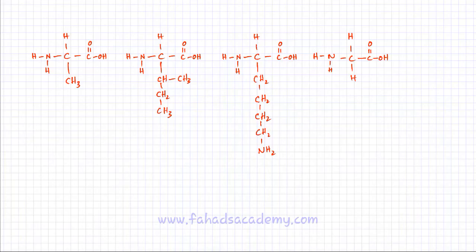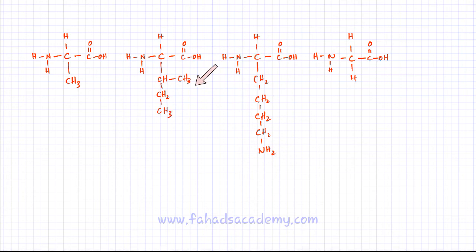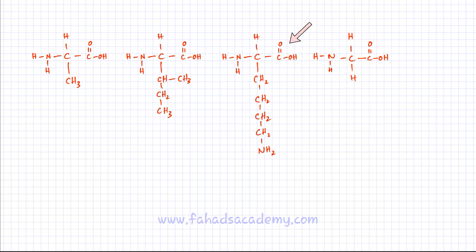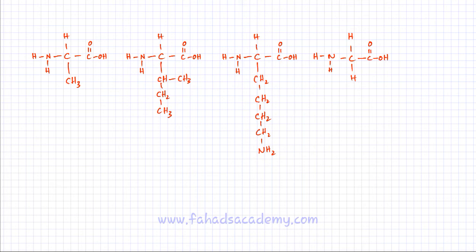Let's do a real example of drawing a polyamide. I've drawn four amino acids, and the structure is the same except for the middle part, which is different for each amino acid. There are 20 to 21 different amino acids making the human body. Each has a carboxylic acid group on one side and an amine group on the other. The middle part — previously represented with a box — is now actually drawn, and it differs in each case.